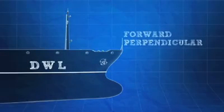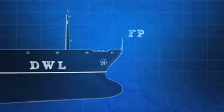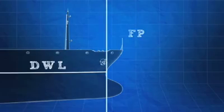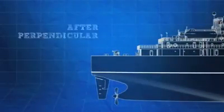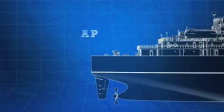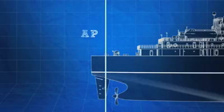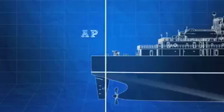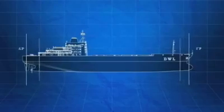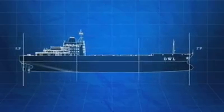The forward perpendicular, or FP, is a vertical line drawn at the intersection of the design waterline and the foreside of the stem of the hull. The after perpendicular, or AP, is a vertical line drawn at the intersection of the design waterline and the aftmost point of a ship's hull. For most commercial vessels, this is generally where the rudder post is located.